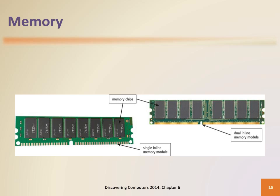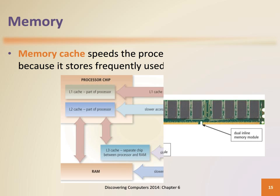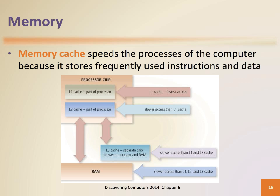RAM chips usually reside on a memory module and are inserted into memory slots. Most of today's computers improve their processing times with cache. One common type of cache is memory cache, which speeds the processes of the computer because it stores frequently used instructions and data.